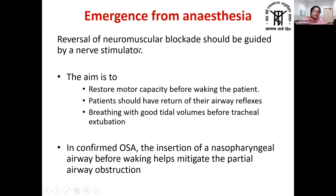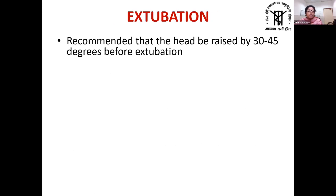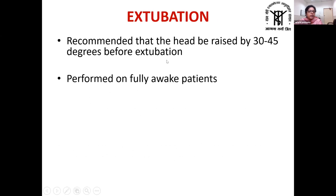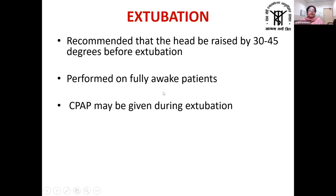For emergence from anesthesia, reversal of neuromuscular blockade should be guided by a nerve stimulator, as neuromuscular blocking drug metabolism is unpredictable in obese patients. Motor capacity must be restored and airway reflexes returned before waking patients; breathing with good tidal volumes before extubation is preferred. In confirmed OSA patients, inserting a nasopharyngeal airway before waking helps mitigate partial airway obstruction. Extubation should be performed at 30–45 degrees head-up (reverse Trendelenburg) in fully awake patients. Giving CPAP during extubation helps recruit lungs; aspirate the nasogastric tube before extubating and be prepared for desaturation episodes as per Difficult Airway Society guidelines.